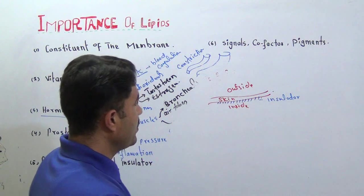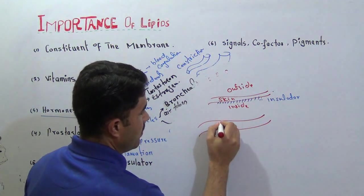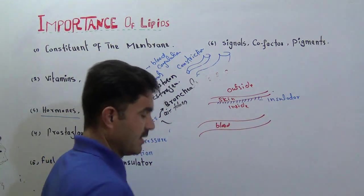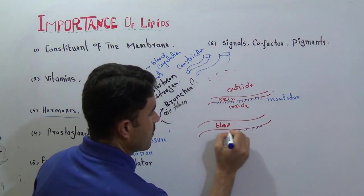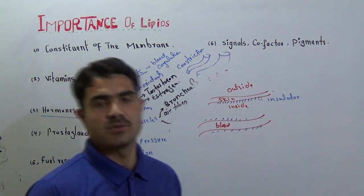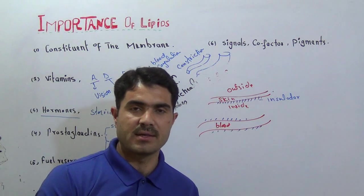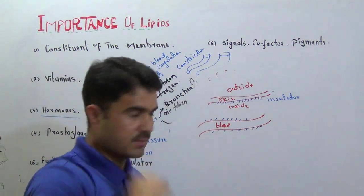Secondly, the same lipid you will also find around the blood vessel. Around the blood vessel, there is lipid, and this lipid will also act as insulator to maintain your body temperature. That helps in the winter season.